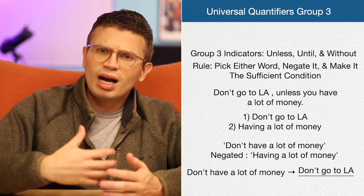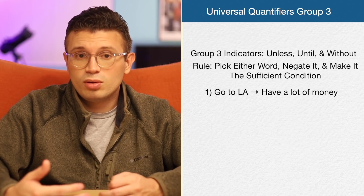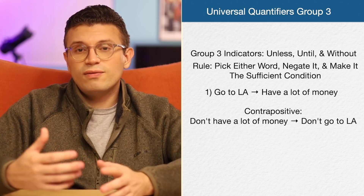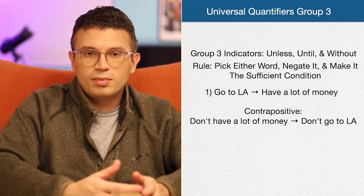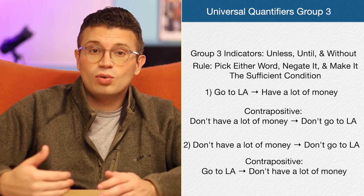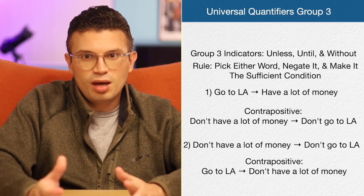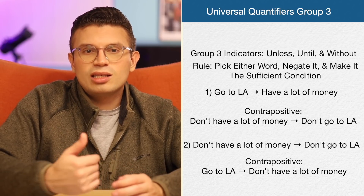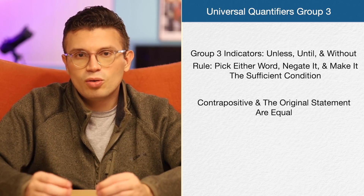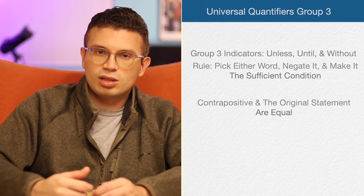Why can we pick either idea and it doesn't make a difference? Let's take the contrapositive of that last example. Our original statement was: if go to LA, then have a lot of money. The contrapositive is: if don't have a lot of money, then don't go to LA. Our second statement was: if you don't have a lot of money, then don't go to LA — and its contrapositive is: if you go to LA, then have a lot of money. So the contrapositive of one statement is just the original statement of the other. It doesn't matter which statement you pick, as long as you remember to negate it and place it in the sufficient condition, because the contrapositive and the original statement are equal. Our group three words are: unless, until, and without.